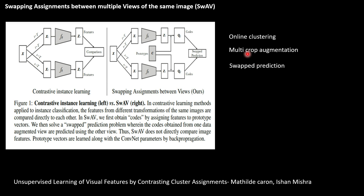SwAV does not directly compare image features — rather it does so through the generated code. They also introduced multi-crop augmentation: instead of just two crops as in normal SimCLR, they create multiple crops of the image.